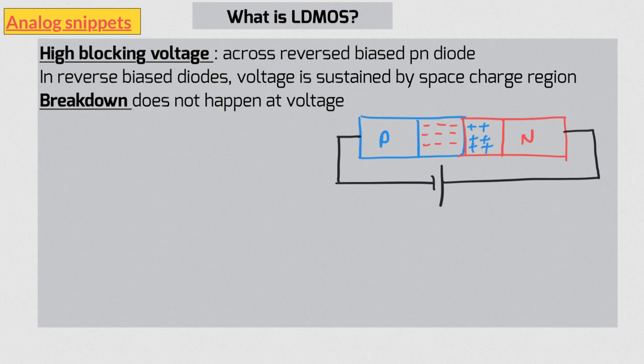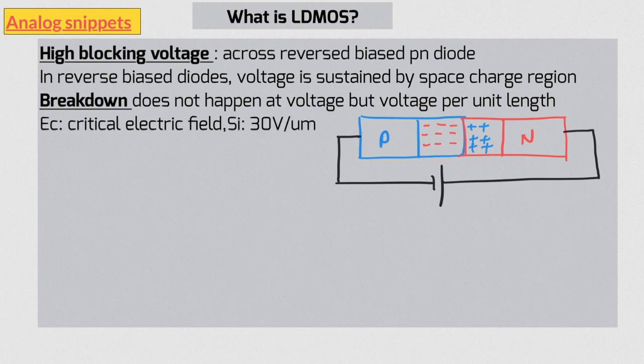So the key parameter for breakdown is not voltage but voltage per length. And in technical jargon, this thing is known as electric field. So breakdown happens when electric field inside this space charge region approaches a critical electric field. In silicon, this value is about 30 volt per micrometer. As you can see, there is a distance involved in this parameter, and that distance is the width of space charge region.